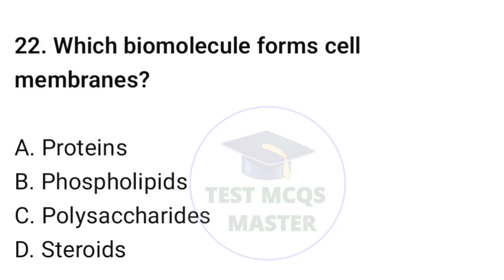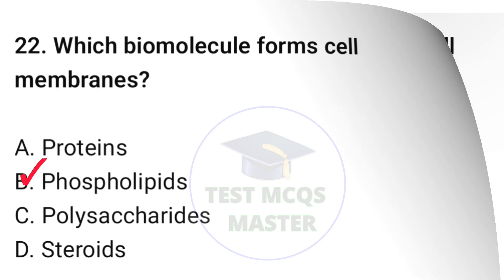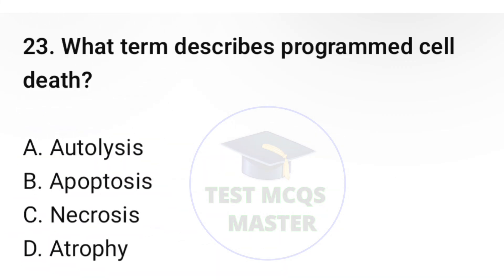Question number twenty-two: which biomolecule forms cell membranes? The correct option is B, phospholipids. Question number twenty-three: what term describes programmed cell death? The correct option is B, apoptosis.